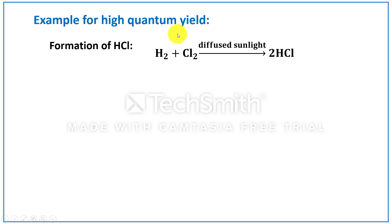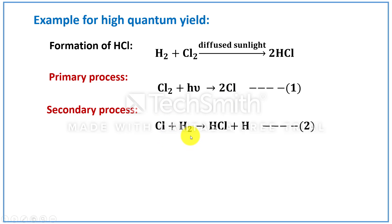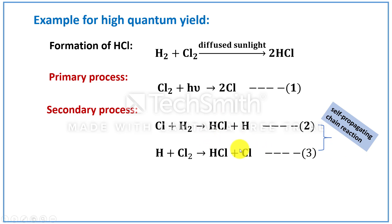Let us see the example for high quantum yield: the formation of hydrogen chloride. When a mixture of hydrogen and chlorine is exposed to light of wavelength less than 4000 Angstroms, hydrogen chloride will be formed. In the primary process, the chlorine molecule absorbs a quantum of energy and dissociates to give two chlorine atoms. In the secondary process, this chlorine atom reacts with a hydrogen molecule to form hydrogen chloride and a hydrogen atom. This hydrogen atom further reacts with a chlorine molecule to give hydrogen chloride and chlorine. The chlorine generated in the third step will again react with another hydrogen molecule to form hydrogen chloride and hydrogen atom. Thus, steps 2 and 3 will keep repeating, and they constitute a self-propagating chain reaction, so more hydrogen chloride molecules will be formed until the reaction gets terminated.